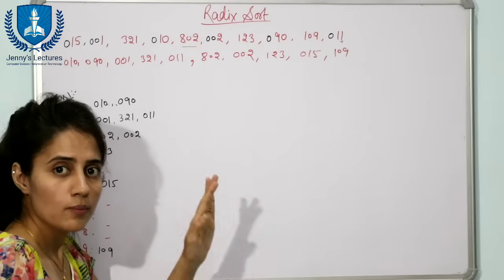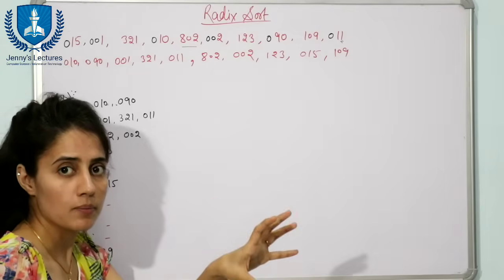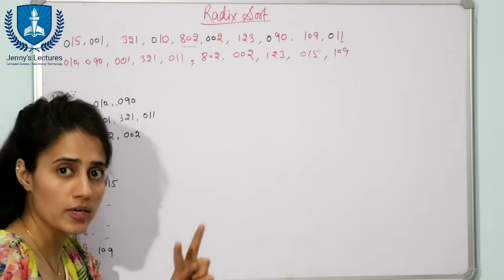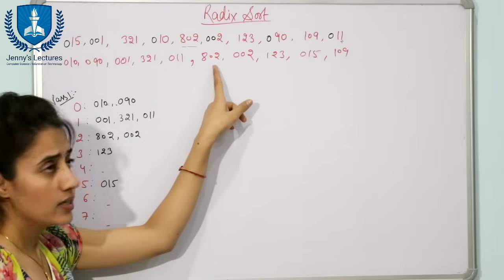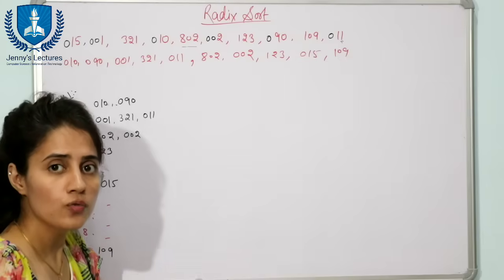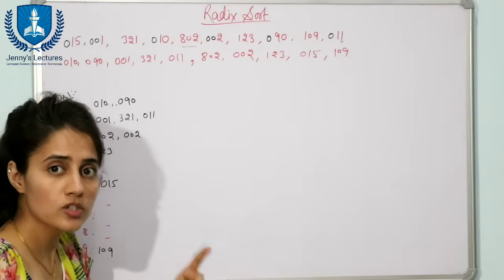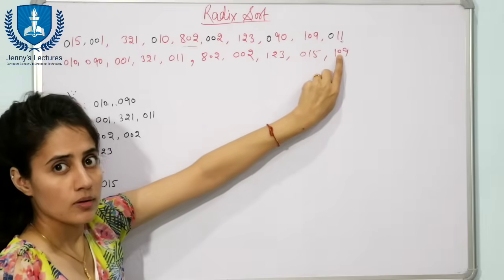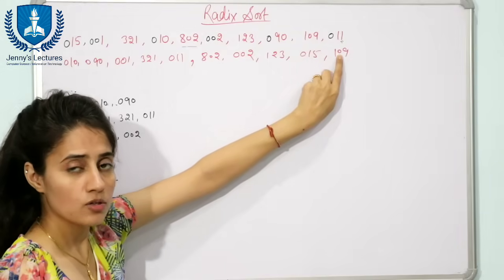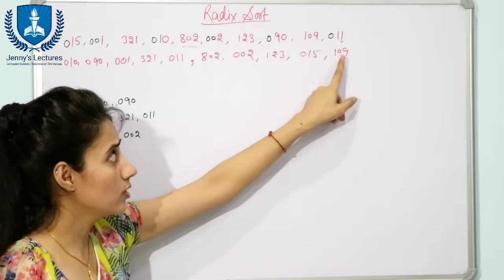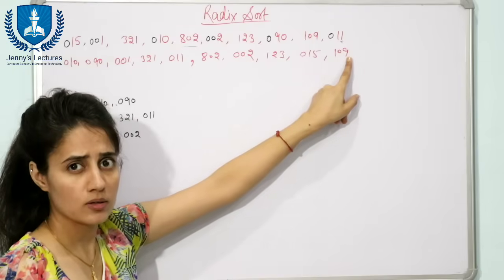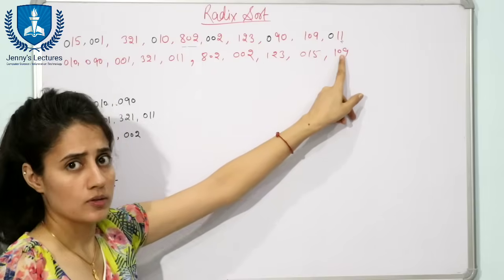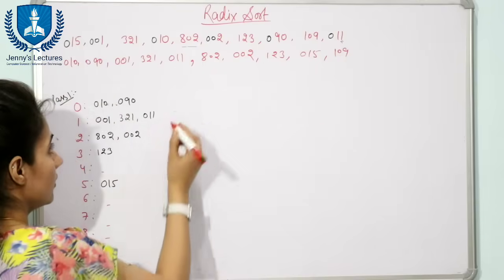The maximum number is 802, which has three digits, so we have three passes. After Pass 1, the data is arranged. Now for Pass 2, we sort the data according to the second digit — the digit at the tens place. We have already sorted according to the ones digit; now we process the tens digit.